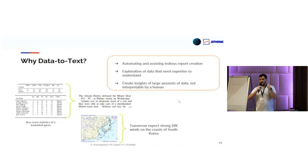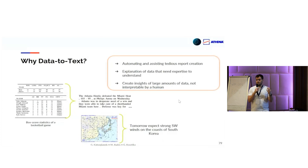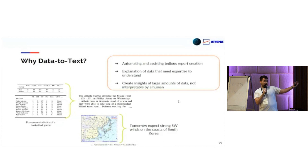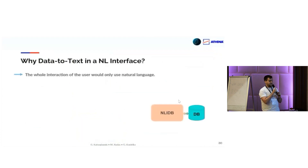Why data to text? One reason is automatic creation of reports or articles. For example, we might have statistics about an NBA basketball game, pass them through a model, and get back a nice verbalization describing the outcome and important things that happened during the game. Or we might have data that is hard to understand, like a weather map with many symbols and lines. If we pass that information through a model, it could explain things in natural text, such as 'tomorrow expect strong southwest winds on the coast of South Korea,' which might be useful.